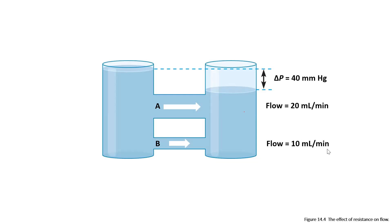Now thinking about the pressure gradient: the relationship between the pressure gradient and flow is directly proportional. The higher the pressure gradient, the more the flow. The lower the pressure gradient, the slower or less the rate of flow.